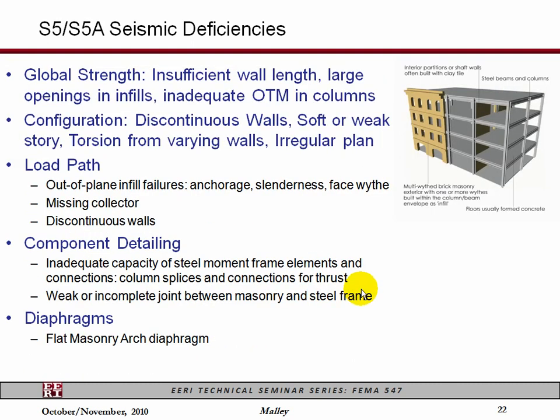On the older steel frames with brick infill, similar issues are going to come up. A lot of times these do have discontinuous walls at the ground floor — it's very common to have a storefront at the ground floor, with shops along the street frontage. So you're going to end up having the brick reduced in capacity at the ground floor and may end up with a soft story. There are ways to approach that, maybe with some bracing or some new walls behind the existing brick walls. When Brett talks about masonry, a lot of the retrofit techniques for a masonry wall building would also be applicable to this type of construction.